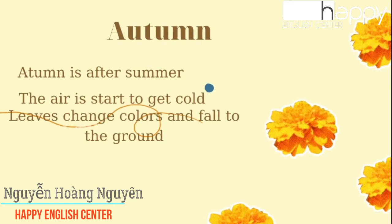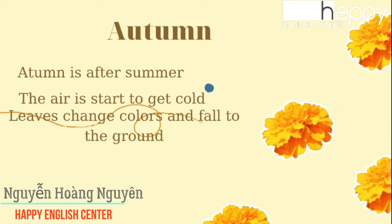Autumn is after summer. It starts to get cold. Leaves change color and fall to the ground.